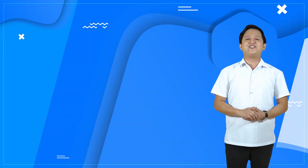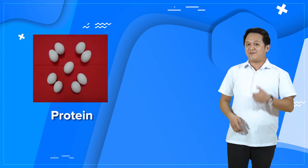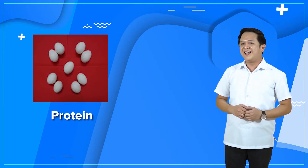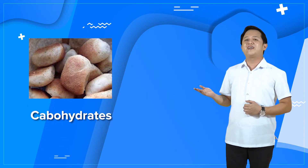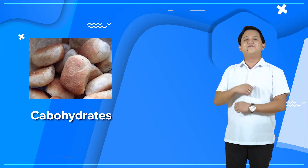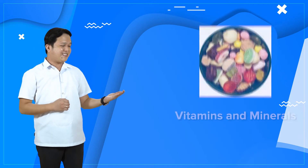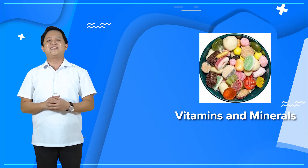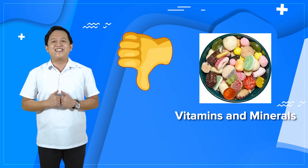The first pair of pictures: Eggs and Protein — thumbs up or thumbs down? Number 2: Bread and Carbohydrates — thumbs up or thumbs down? Number 3: Candies, Vitamins, and Minerals — thumbs up or thumbs down?